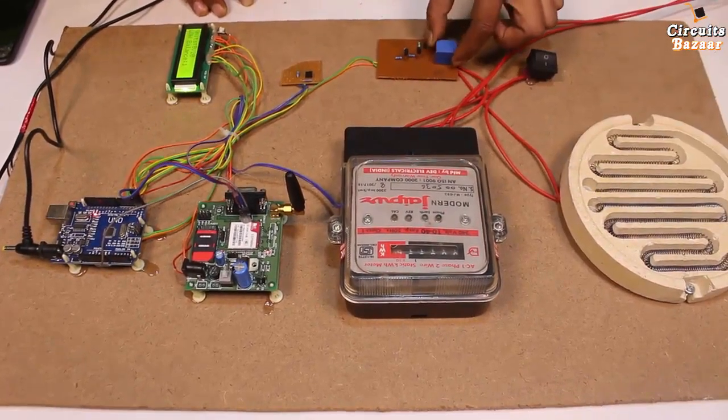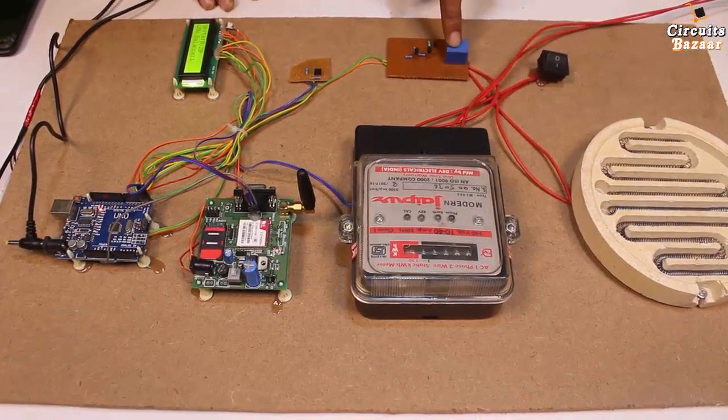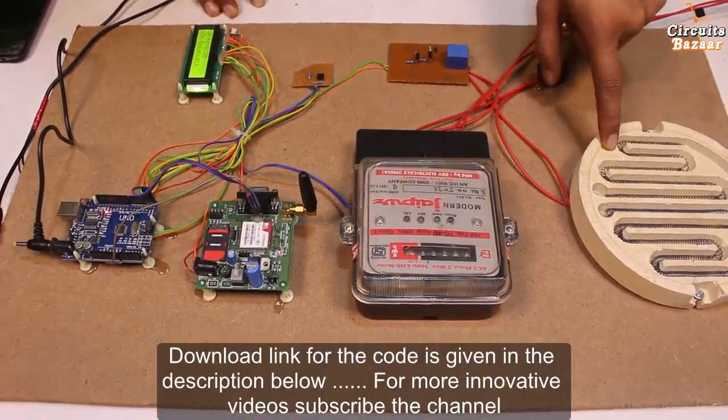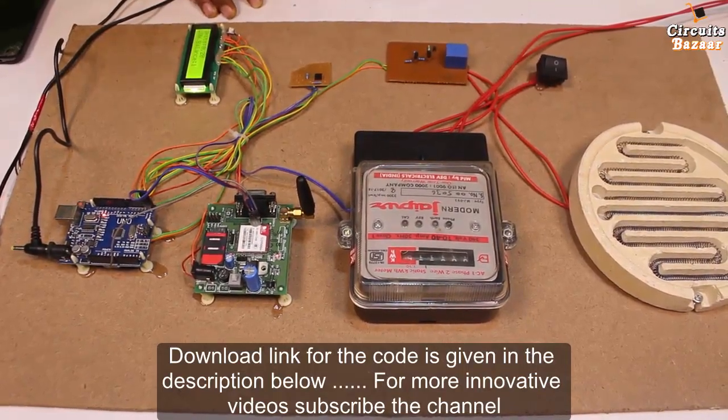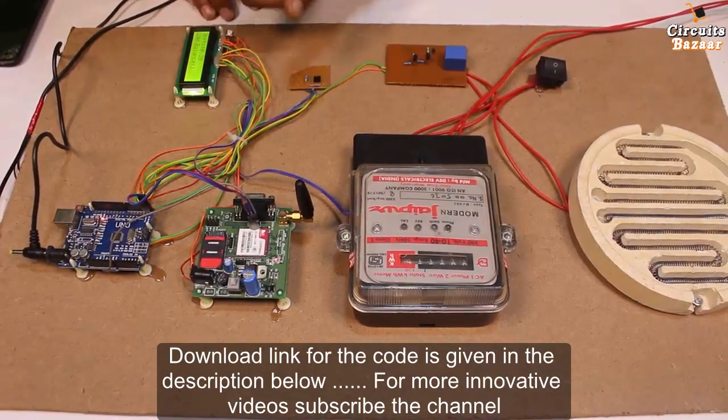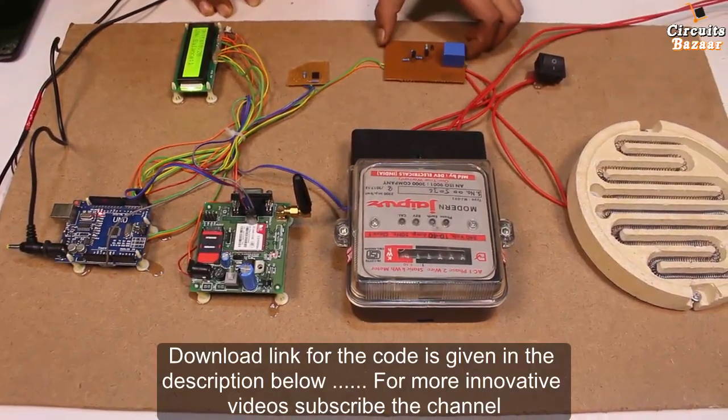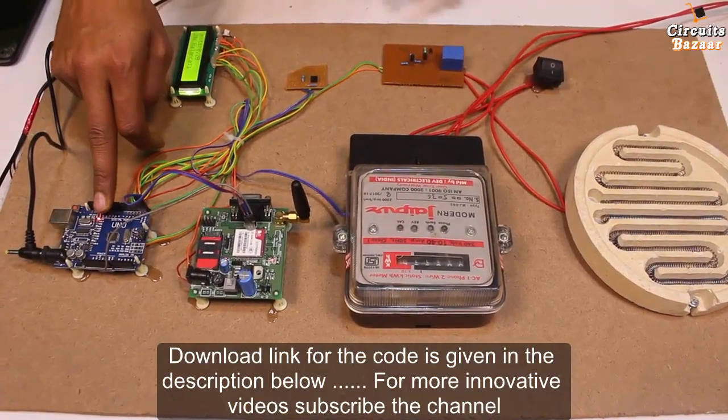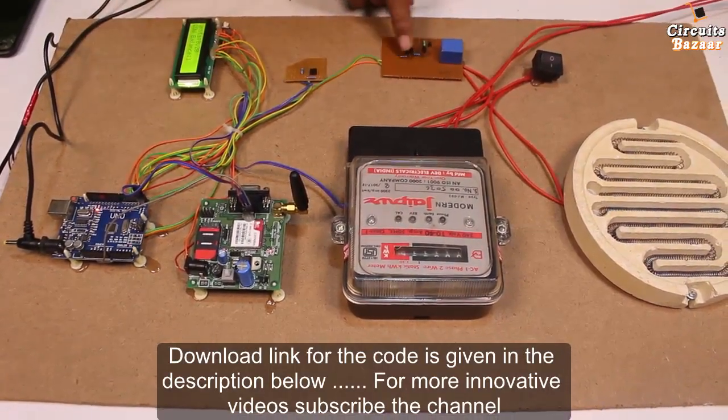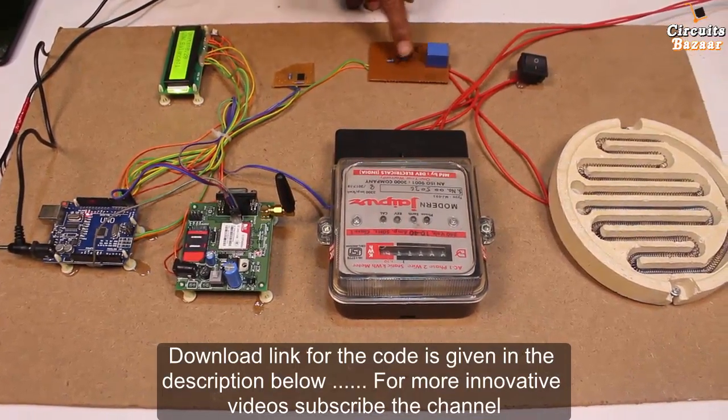And this load is controlled through this relay. If balance is low, then this relay will cut down the power supply, so you cannot run the load if balance is low. Then in that case, you have to recharge your energy meter. So this relay board is basically driven by the Arduino board. This Arduino board will provide signal to the drivers. These two transistors are acting as a driver over here. These are the Darlington pair, and these two transistors will drive the relay.